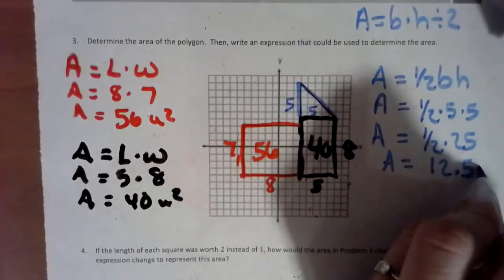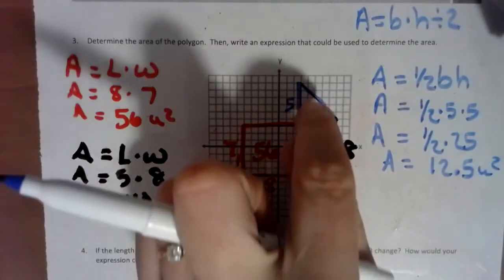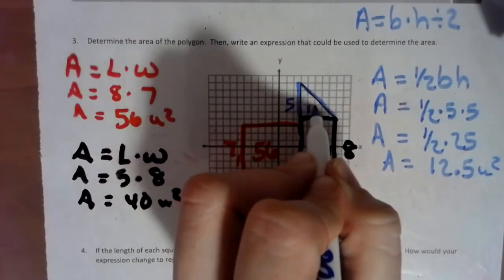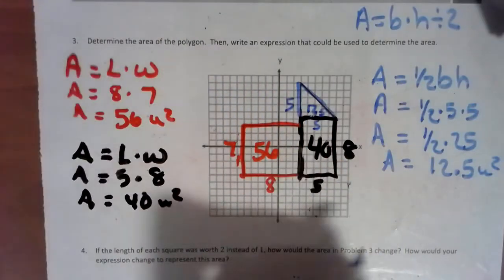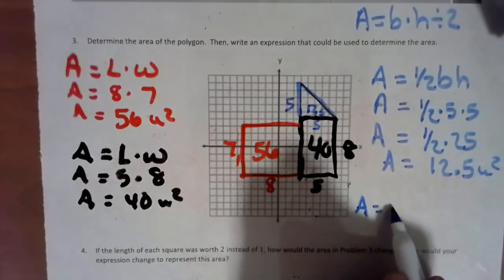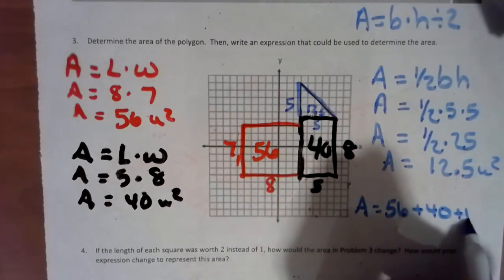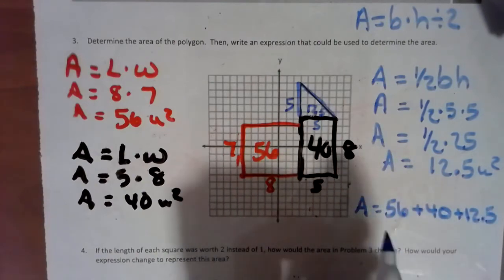And half of 25 is 12 and a half. So, we'll do that. And that's units squared. So, that little triangle, that little 5 right there is 12.5. So, now we have to take area and we have to add it all up. And we have that rectangle of 56, that one of 40, and that one of 12 and a half.